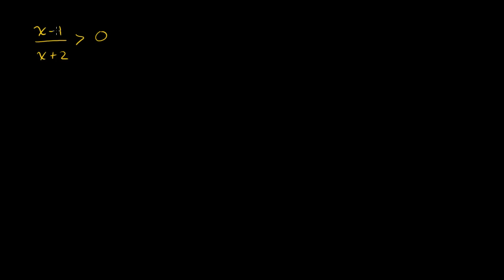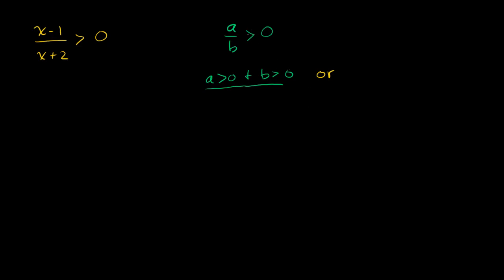If I have any number divided by any other number and I say they're going to be greater than 0, we just have to remember our properties of multiplying and dividing negative numbers. In what situation is this fraction going to be greater than 0? Well, this is going to be greater than 0 only if both a and b are greater than 0, or we have a negative divided by a negative — same sign divided by same sign is positive. So whenever you have a rational expression like this being greater than 0, there are two situations: the numerator and denominator are both greater than 0, or they're both less than 0.